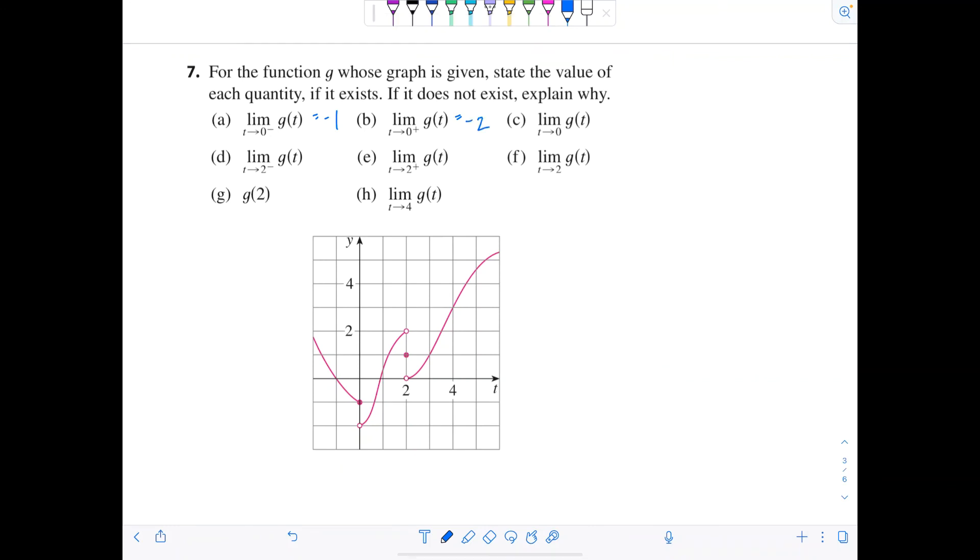And then c wants the limit, the two-sided limit as t approaches 0. So again, we just found the limit from the left and the limit from the right, and they're not equal. No, they are not. So we can say this limit does not exist because limit as t approaches 0 from the left of g of t does not equal the limit as t approaches 0 from the right of g of t. Get used to that notation. Okay.